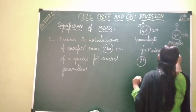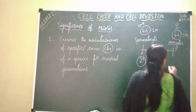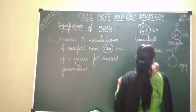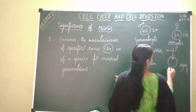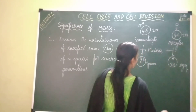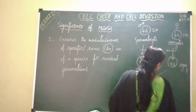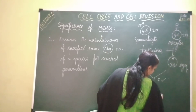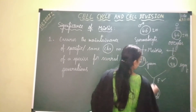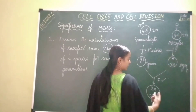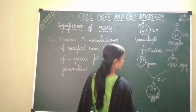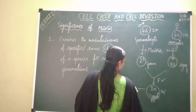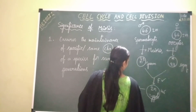Similarly, oocytes also undergo meiosis and form eggs or female gametes, which are also haploid with a chromosomal number of 23. When the sperm and egg fuse together — that is, fertilization occurs — a zygote is formed. This zygote is again diploid because two haploid cells fuse together, resulting in a diploid zygote with chromosomal number 23 plus 23 equals 46. This zygote undergoes mitotic divisions and develops into an embryo, which develops into a new individual.